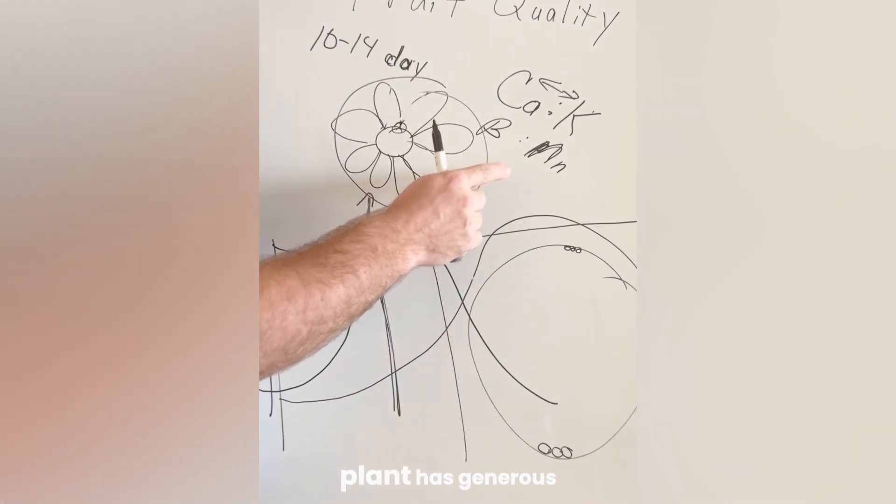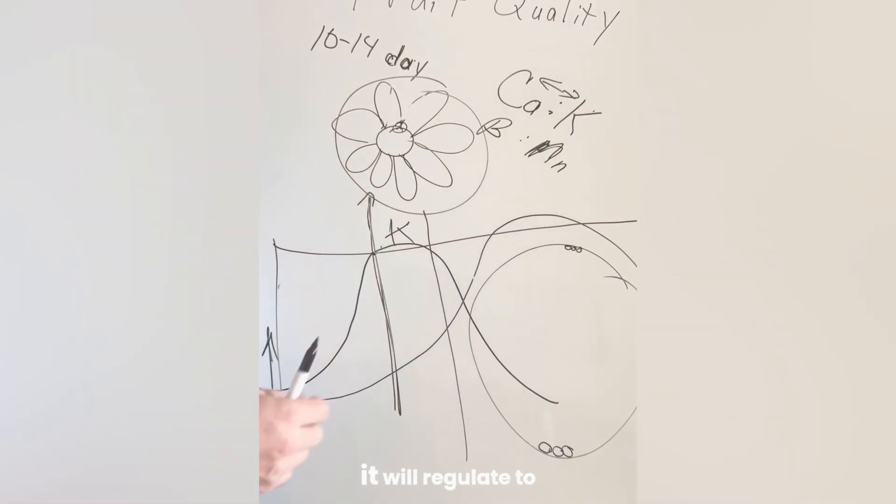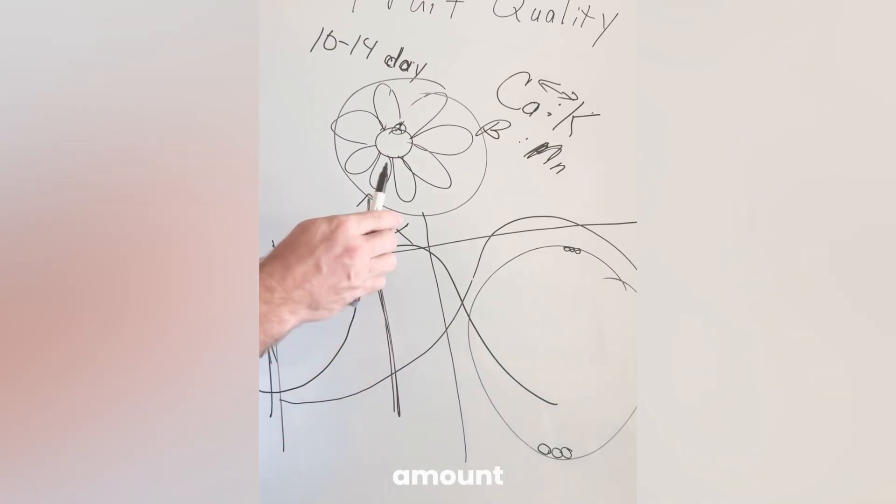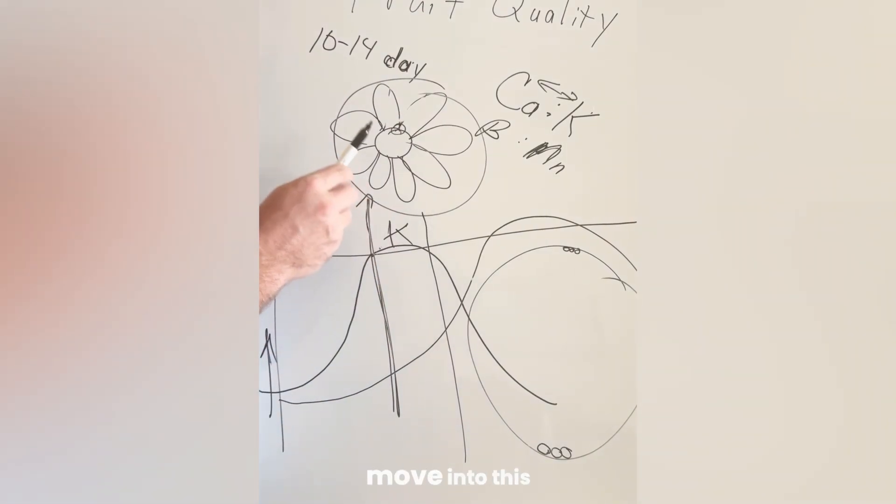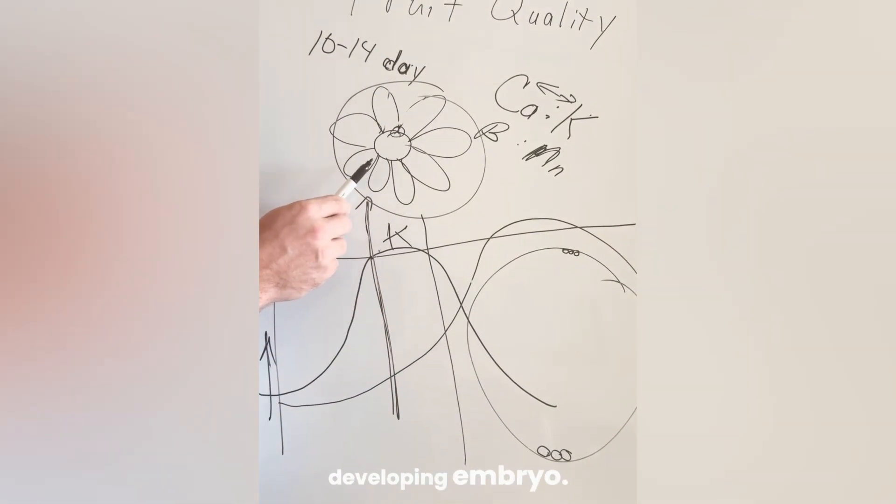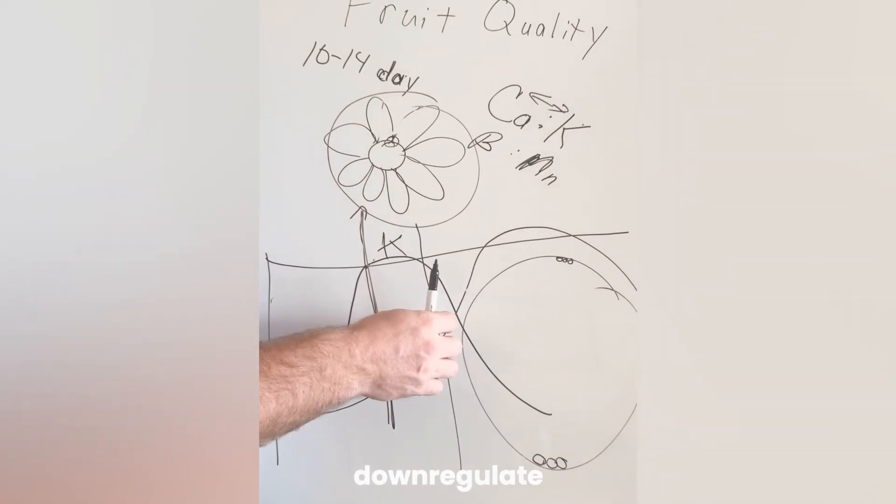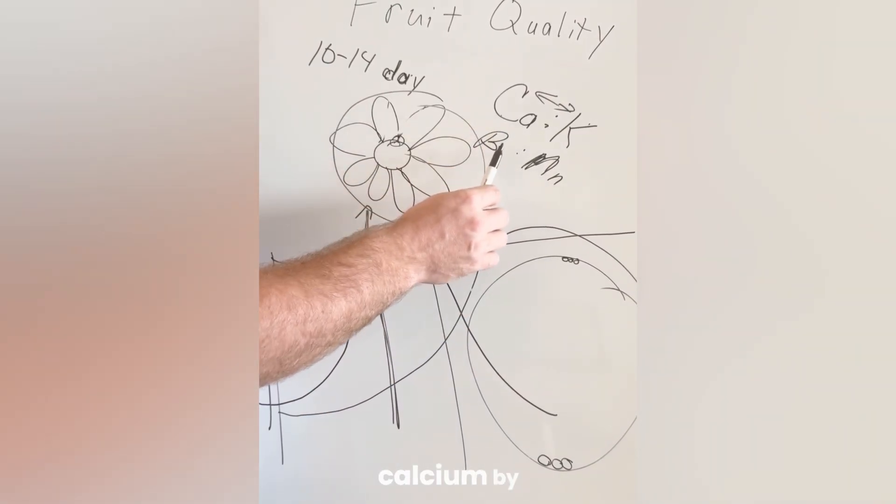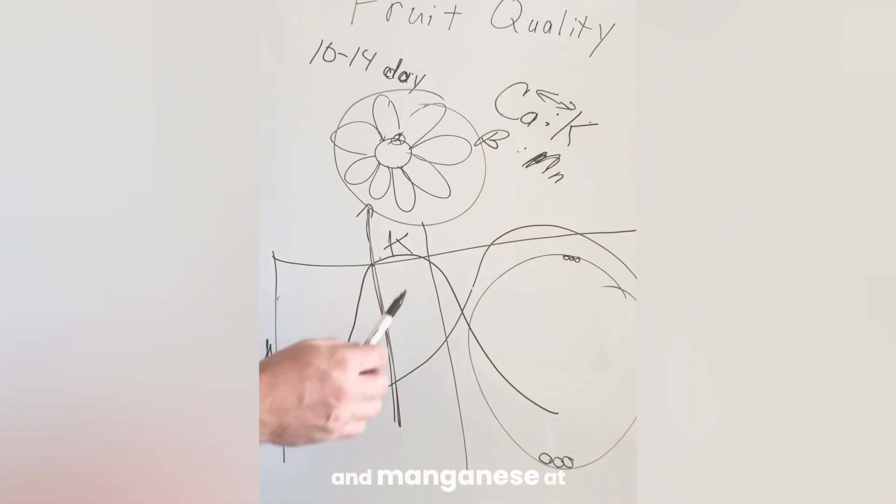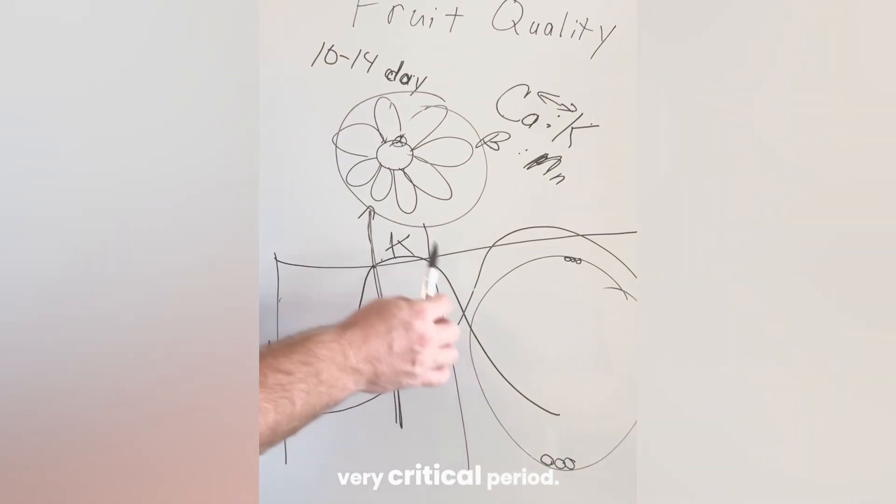As long as the plant has generous levels of manganese, it will regulate to some degree the amount of potassium that will move into this developing embryo. And so you can down-regulate potassium and up-regulate calcium by managing boron and manganese at this very critical period.